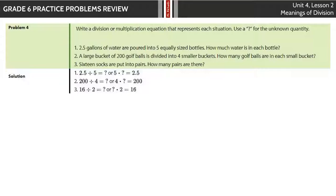Write a division or multiplication equation that represents each situation. Use a question mark for the unknown quantity. 2 and a half gallons of water are poured into 5 equally sized bottles. How much water is in each bottle? Well, if I have 2 and a half gallons, and I'm dividing it amongst 5 bottles, that's going to be how much is in each bottle. I could also then take 5, the 5 bottles, and multiply by how much is in each, and that would be 2 and a half.